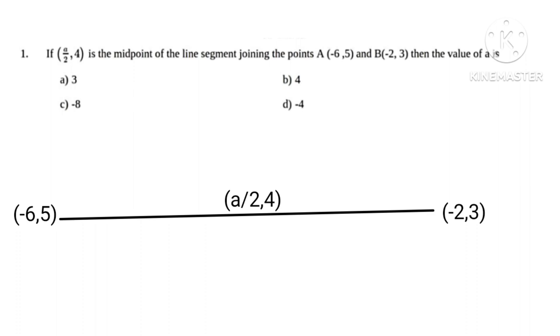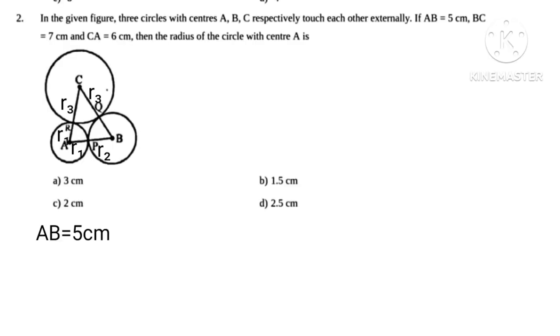Using midpoint formulae, given that y upon 2 equals minus 6 minus 2 upon 2, implies that minus a upon 2 equals minus 4, hence a equals 8. AB equals 5 centimeters, BC equals 7 centimeters, and CA equals 6 centimeters. Let r1, r2, and r3 are radius of 3 circles.